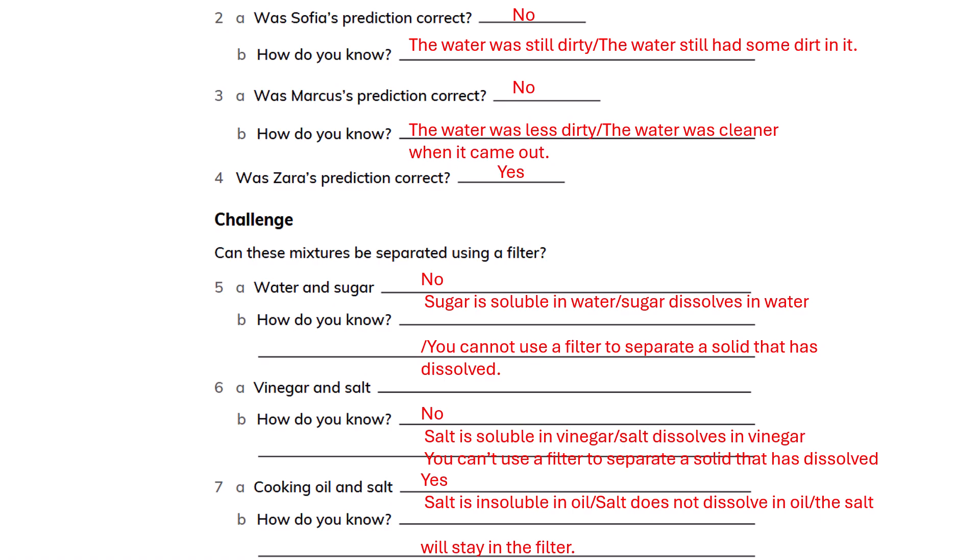Can these mixtures be separated using a filter? Water and sugar cannot be separated because sugar is soluble in water — it dissolved, and you cannot separate a dissolved solid from a liquid. Vinegar and salt cannot be separated because salt is soluble in vinegar. Cooking oil and salt can be separated because salt is insoluble in oil, so it will not dissolve.